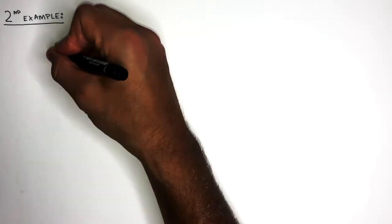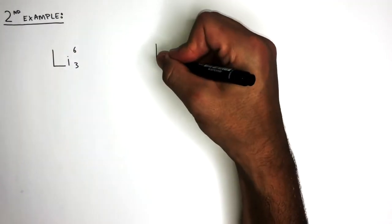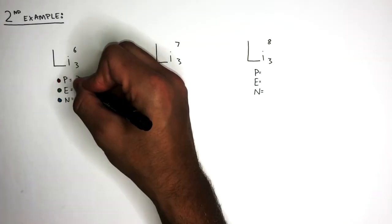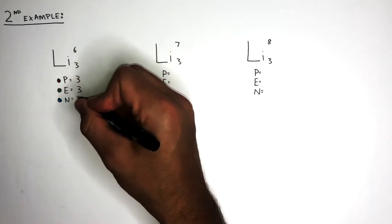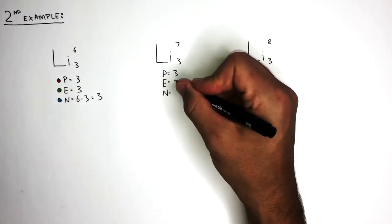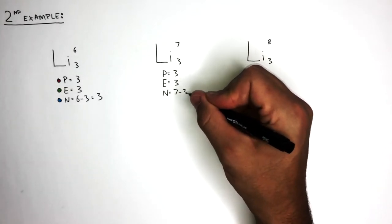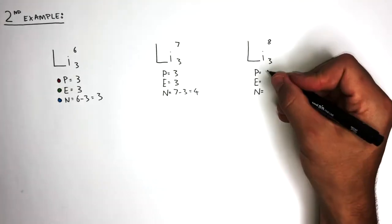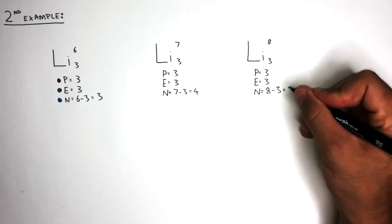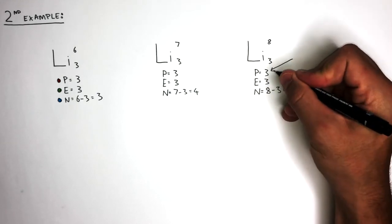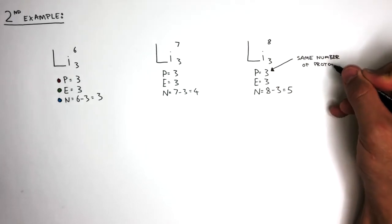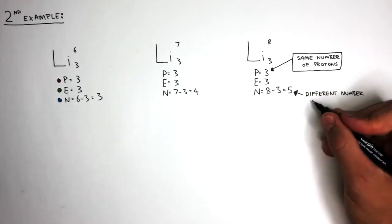In the second example, we're going to look at three isotopes of lithium: lithium-6, lithium-7, and lithium-8. Lithium-6 has three protons, three electrons, and three neutrons. Lithium-7 has three protons, three electrons, and four neutrons. Lithium-8 has three protons, three electrons, and five neutrons. Like before, each isotope has the same number of protons and a different number of neutrons.